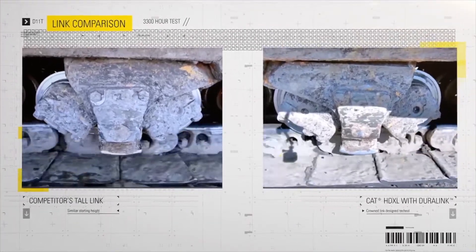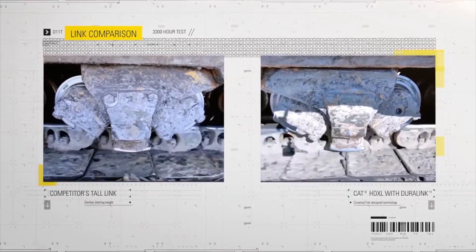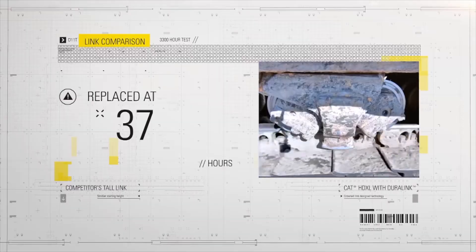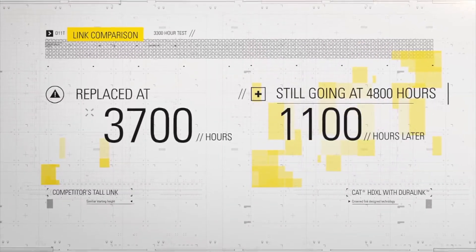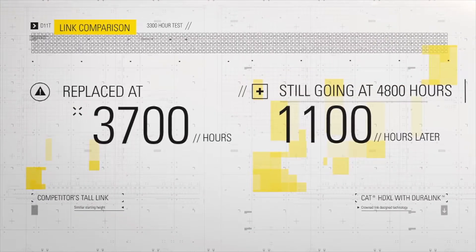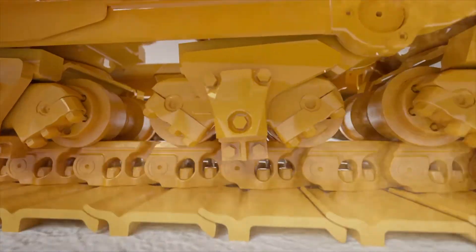See the proof in real time. Here's customer footage using a Cat and a competitor undercarriage, both at 3,300 hours. No surprise: the competitor undercarriage was replaced at 3,700 hours, and the HD XL with DuraLink was still going over a thousand hours later.